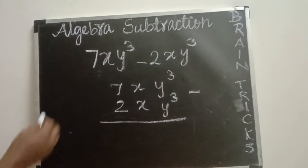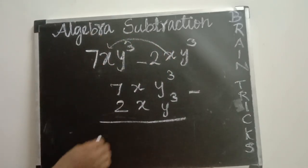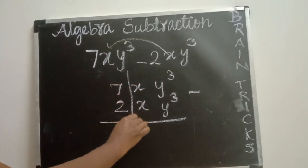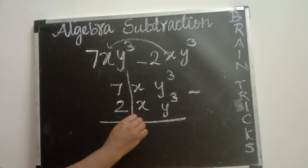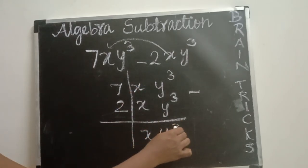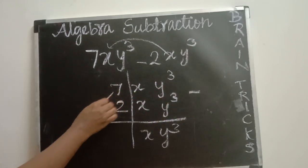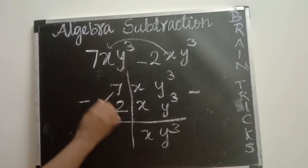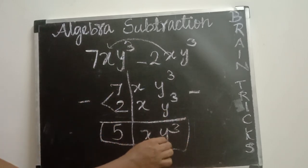Now we are going to do subtraction. We should not touch the variables — just write the variable as it is: xy power 3. Then do subtraction only in the numerical place: 7 minus 2 which is 5. So the final answer is 5xy power 3.